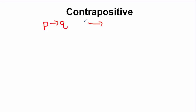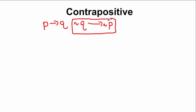Whatever your conditional statement is, to get the contrapositive, you're going to take the hypothesis and conclusion, switch them, but then you're also going to do the negation of each one. So notice: hypothesis, conclusion — you switch them, and you also do the negation of each one.